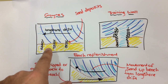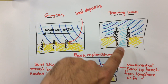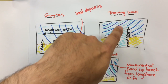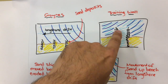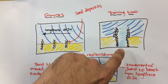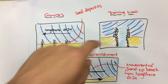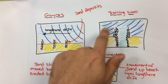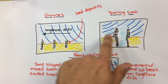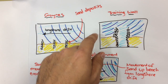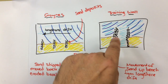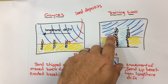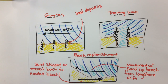Training walls use long channels — boating channels — to make sure that sand doesn't build up and that the channel is deep enough for ships and vessels to travel through. You can see with the blue lines here representing the waves — with the process of longshore drift, the training wall interrupts that pattern of sand being moved across, and it will be deposited at spots alongside the wall.